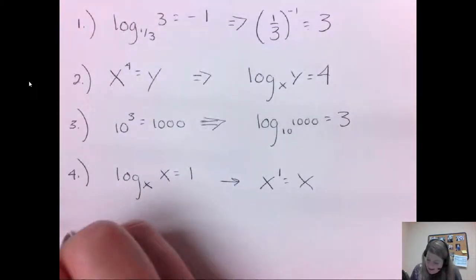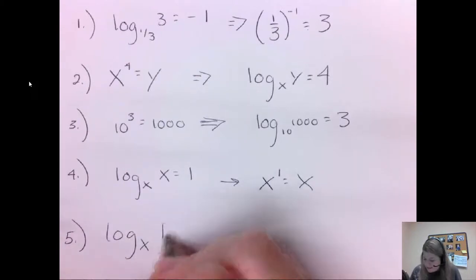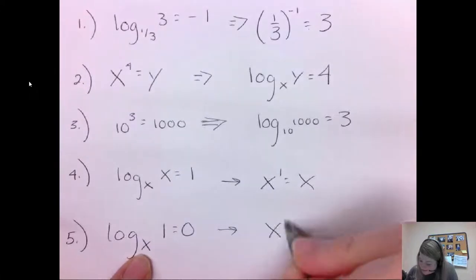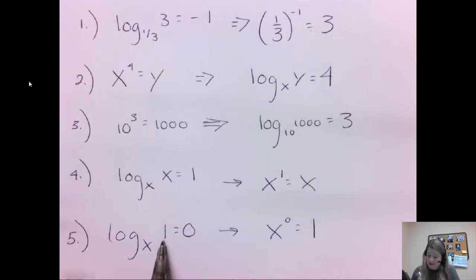Another one is if I have log of 1 equals 0. Anything to the 0 power is 1. Because if I have x to the 0 power, that has to equal 1. So x to the 0 equals 1. So if your log ever equals 0, well, first of all, that would have to be a 1. So something to the 0 power equals 1 in order for that one to work.